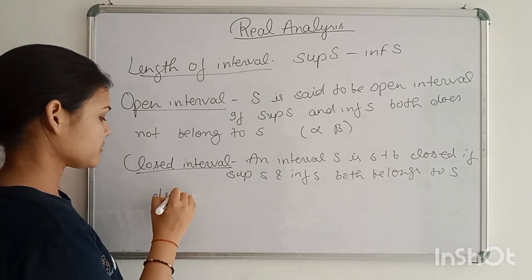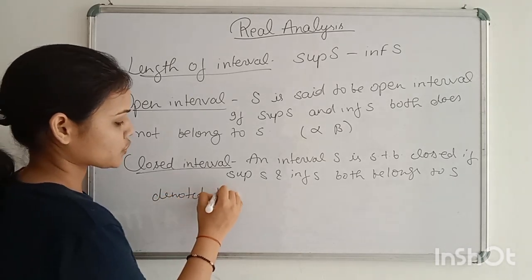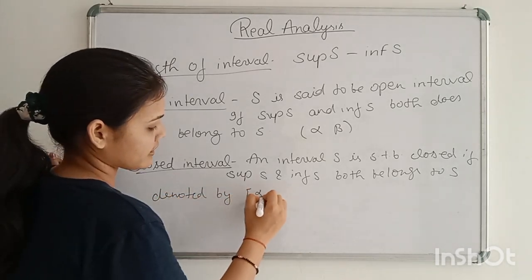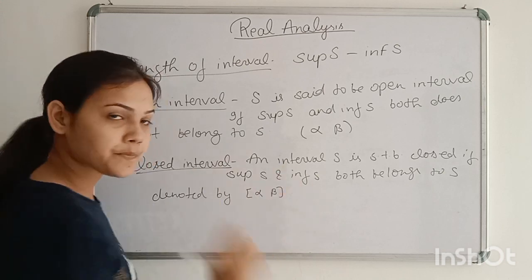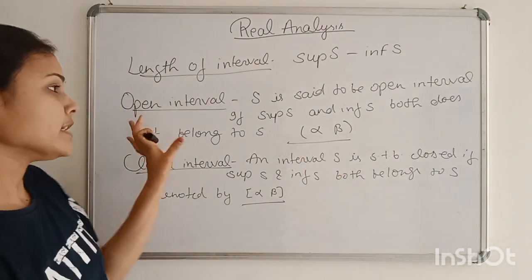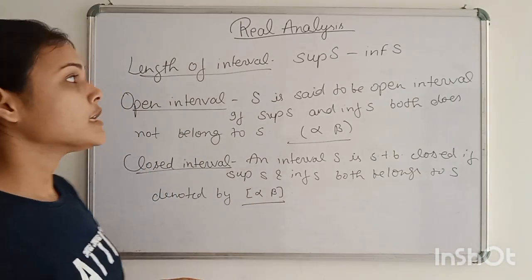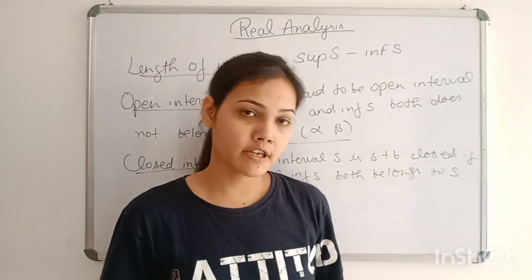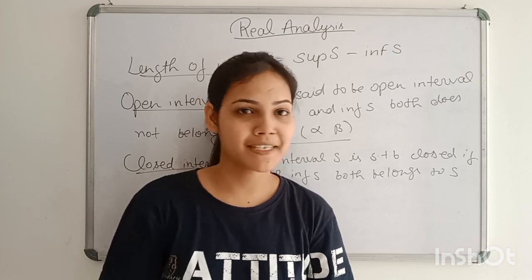How can we denote it? Denoted by alpha, beta. Closed interval is done, open interval is done. This definition is okay. So if you want to know about intervals and open interval, closed interval, please like and subscribe.